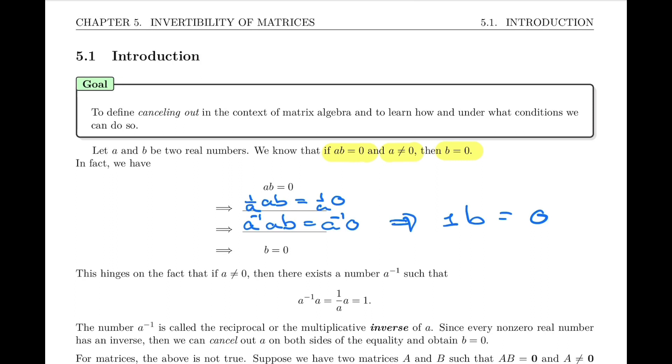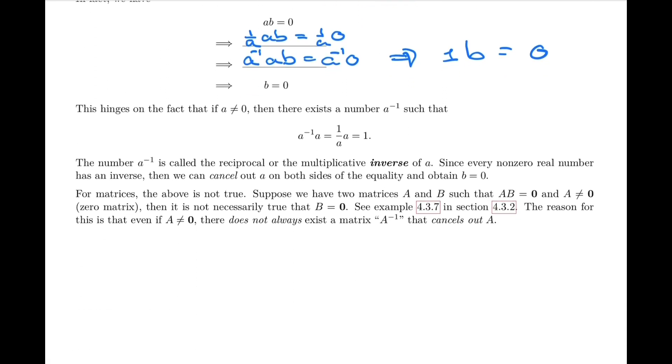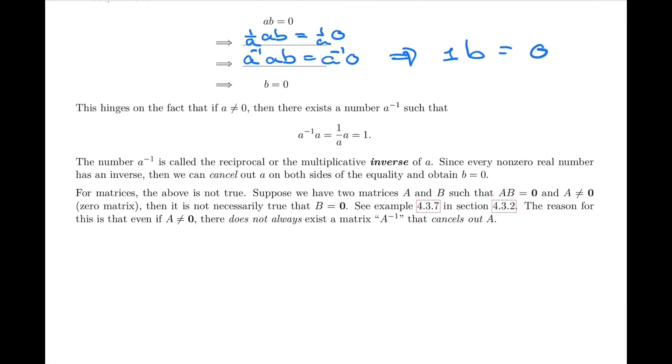And so that's what we mean by canceling out A, or multiplying both sides by A inverse. Now this hinges on the fact that every non-zero real number has what we call a reciprocal, or we can simply call it the inverse of A. And so we can multiply both sides by that number and cancel out.